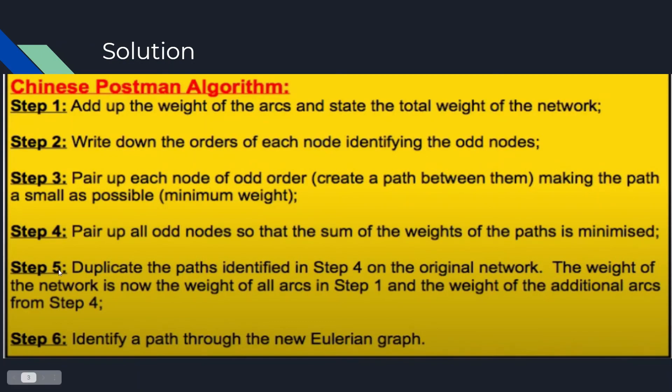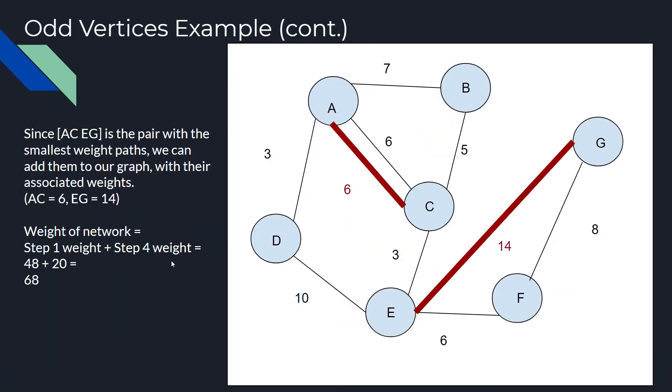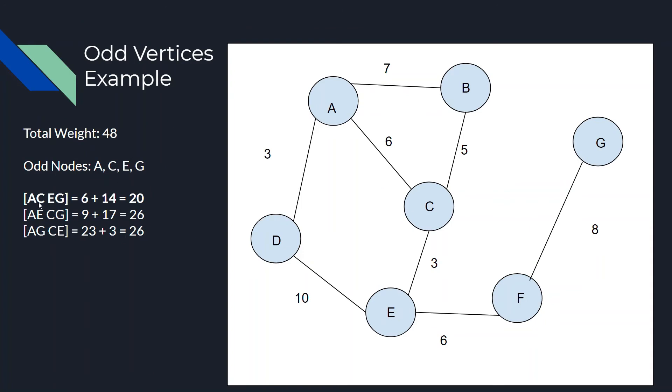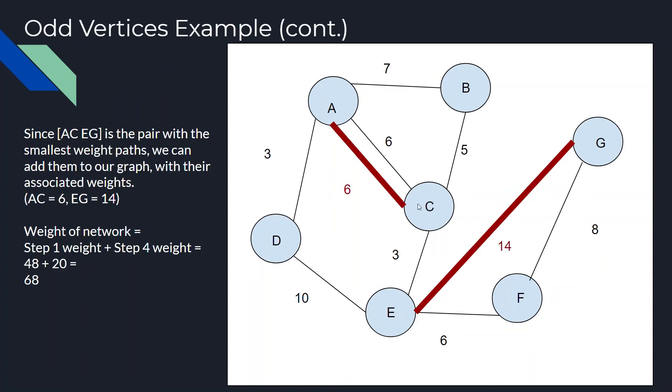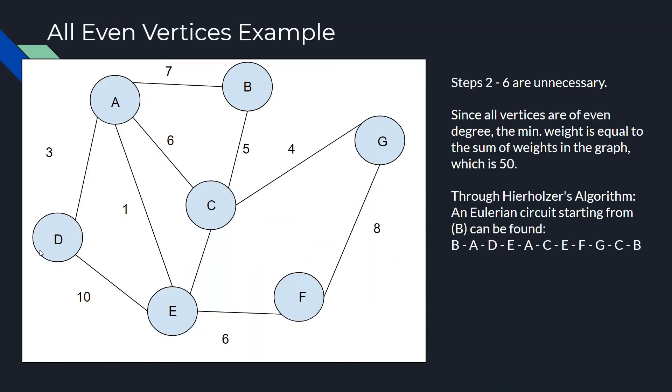So, lastly for step 5, all we have to do is simply add the two edges that we've found to be the smallest combined weight. So, that's AC and EG. We'll add their corresponding weights as well. And finally, in step 5, it tells us to add the weights together.